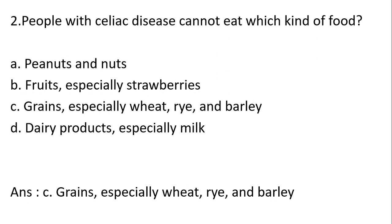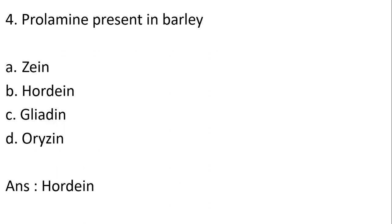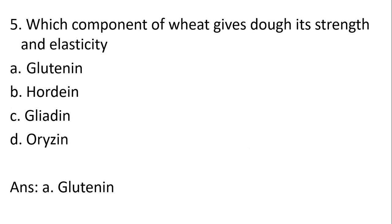MCQ 3: Celiac disease is related to which substance — lactose, albumin, gluten, or rye? Answer: C, gluten protein. MCQ 4: Prolamin present in barley — zein, hordein, gliadin, or rye? Answer: B, hordein.